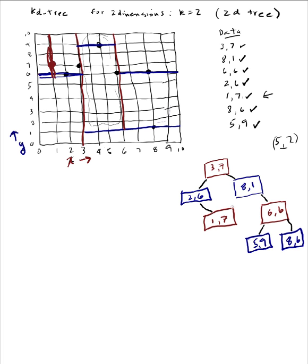So that's the idea of how the KD tree that I constructed here partitions up the area. If I have this area right here, a point in that area is going to be in the less than x=3 and less than y=6 domain.